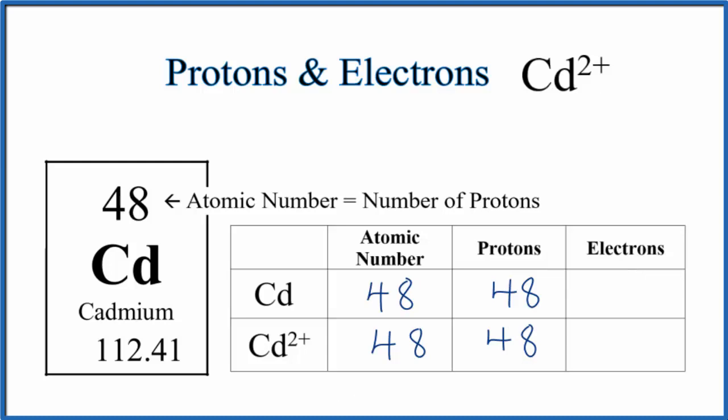To figure out the number of electrons, if we look at the neutral element, the number of protons will equal the number of electrons. So neutral cadmium has 48 protons, so I'll have 48 electrons.